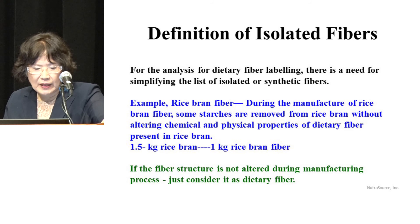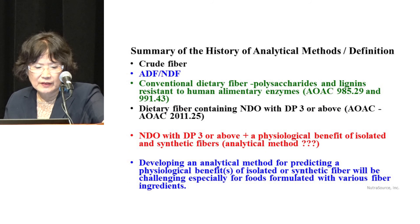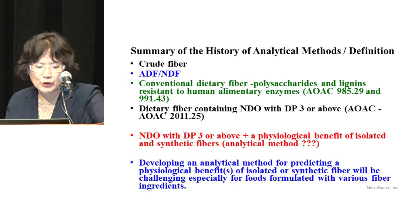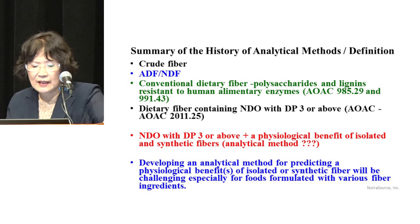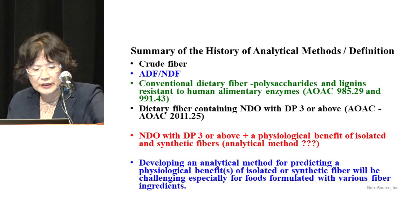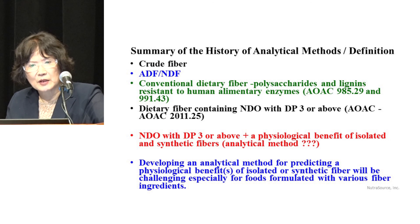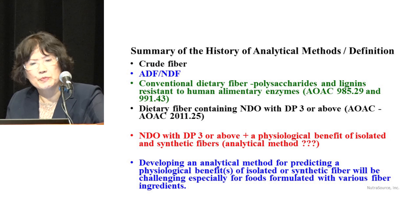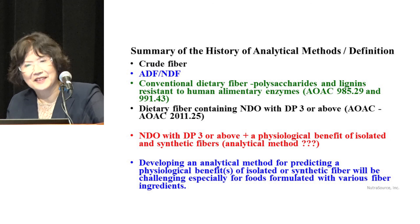In summary, we started with crude fiber, then acid detergent fiber and neutral detergent fiber, and now we have AOAC 985.29, 991.43, and 2011.25. The next step is for someone to develop a method meeting the FDA definition of dietary fiber — it will be a big challenge. Thank you.